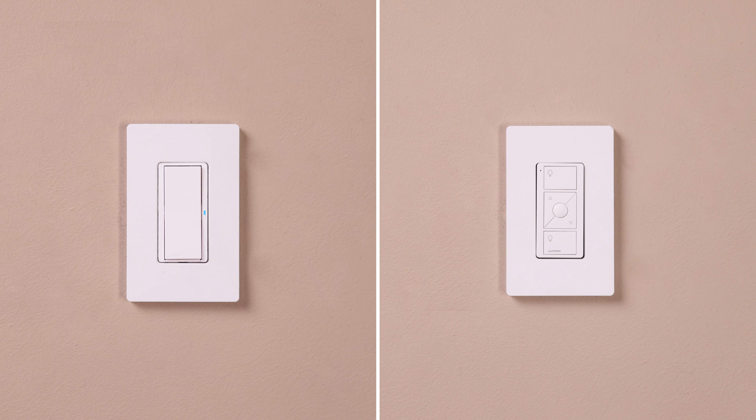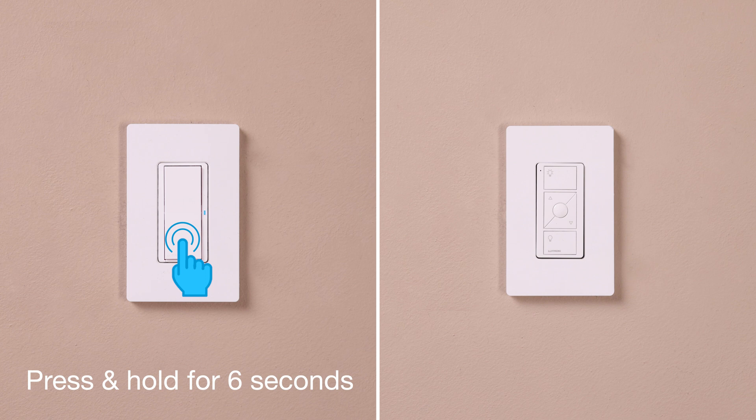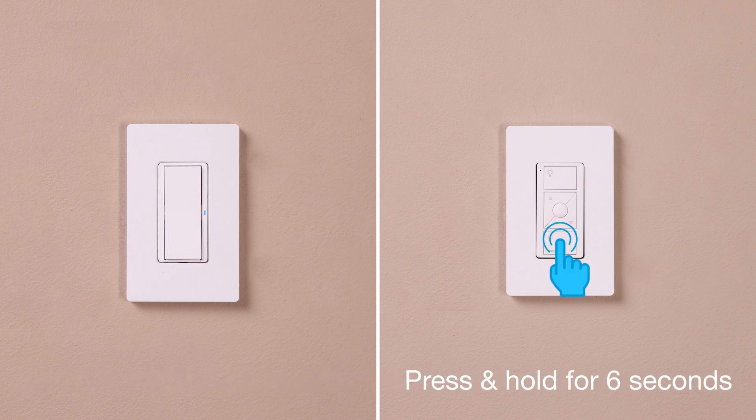Then press and hold the off button on the switch for six seconds until the LED on the switch starts blinking. Then press and hold the off button on the wireless remote for six seconds until the light you're controlling flashes three times.